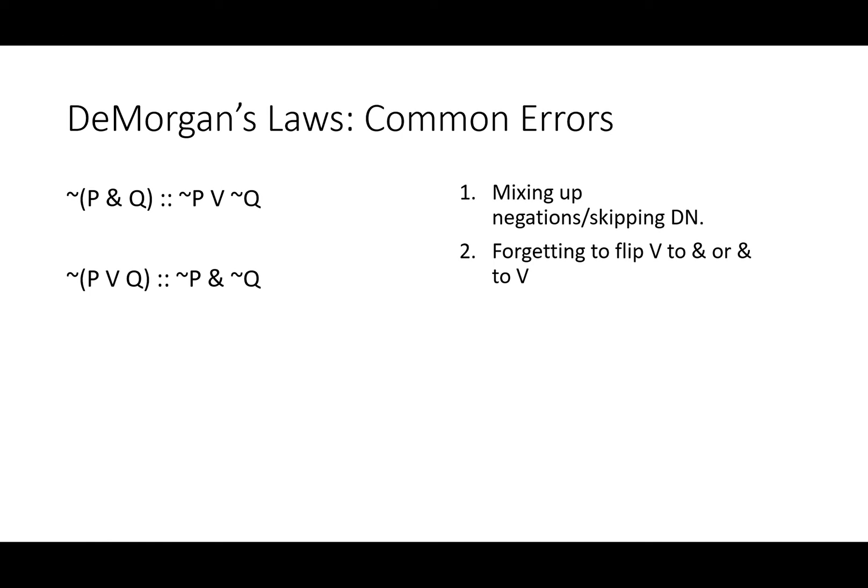DeMorgan's laws are ones that I see a lot of errors, but they're not really systematic errors. They're simply mixing up negations or skipping double negation or forgetting to flip V to AND or AND to V. There's a lot of moving parts in a DeMorgan's and you've got to deal with a couple of different things at once. And I sometimes see people make sloppy errors or typos. So don't. Do your DeMorgan's carefully. Really do all of your logic carefully. But whenever you find yourself dealing with negations, go just a little bit slower. At least that's what I have to do.